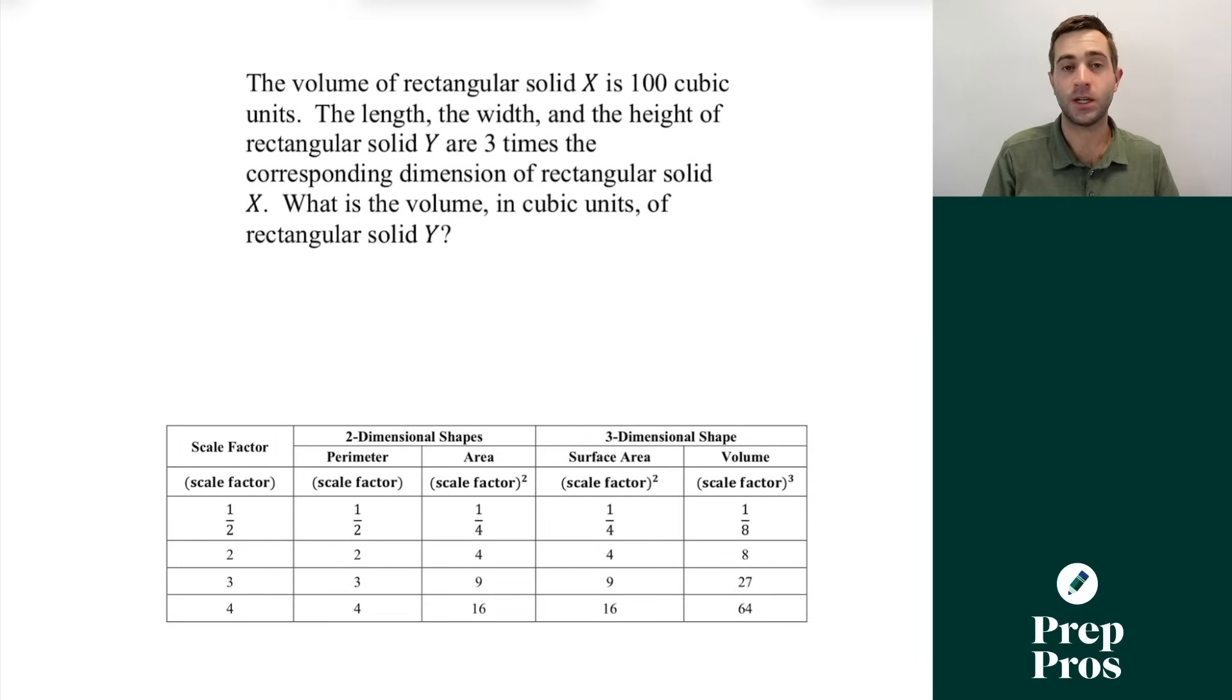Now, the next thing you're definitely going to see on your SAT are scale factor questions. And I actually heard from many of my students that this was one of the last questions they saw on the second harder math module. So it's really important that you memorized this table for my book here. So here we see the volume of rectangular solid X is 100 cubic units. The length, the width, and the height of the rectangular solid Y are three times the corresponding dimensions of rectangular solid X. What is the volume in cubic units of rectangular solid Y?